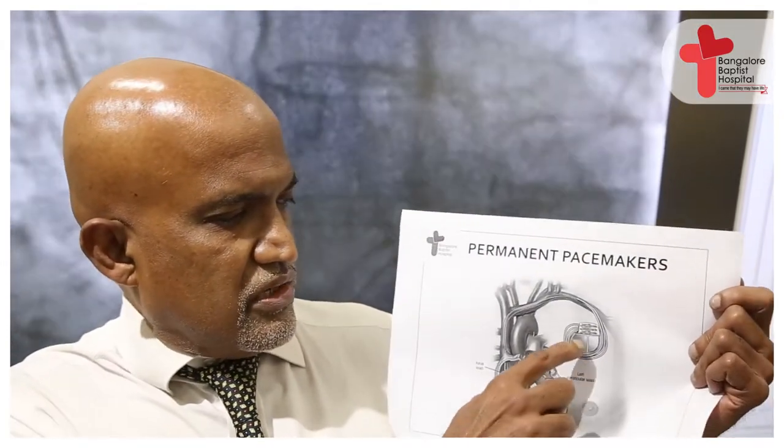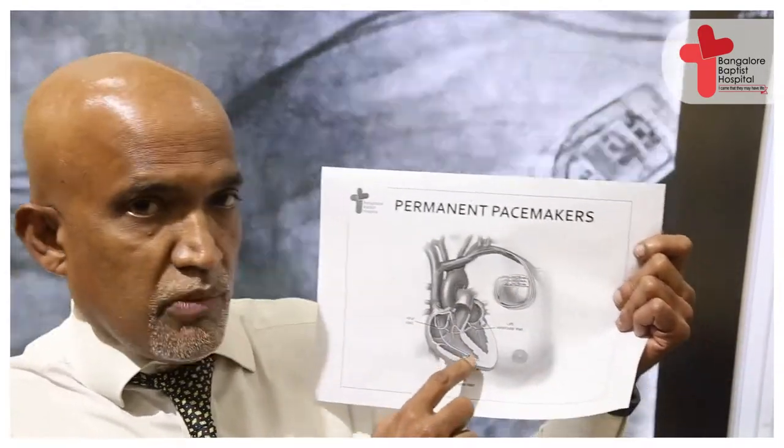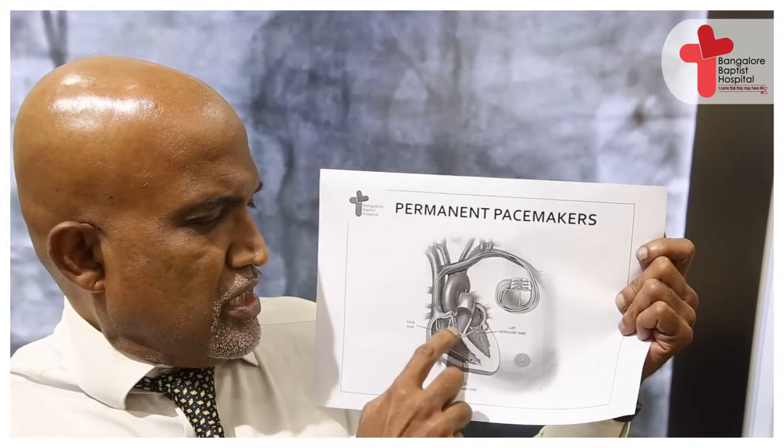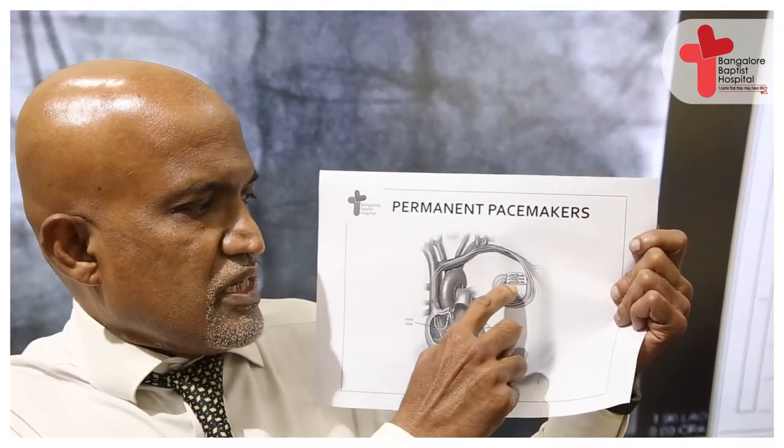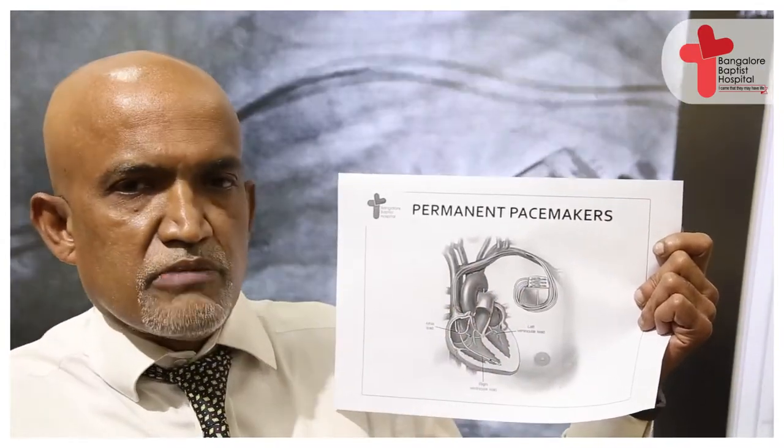That is when a pacemaker is done. A pacemaker is an electronic device which rewires the heart and reestablishes the electrical connection. For example, in the heart there is this machine with two wires — one on the top and one on the bottom. These wires tell the electronic machine that the heart is not beating properly, and it takes control to make the heart beat properly. That is what a pacemaker is.